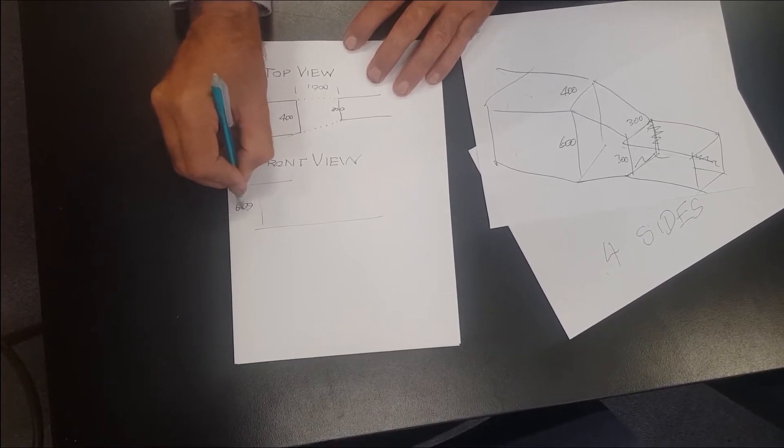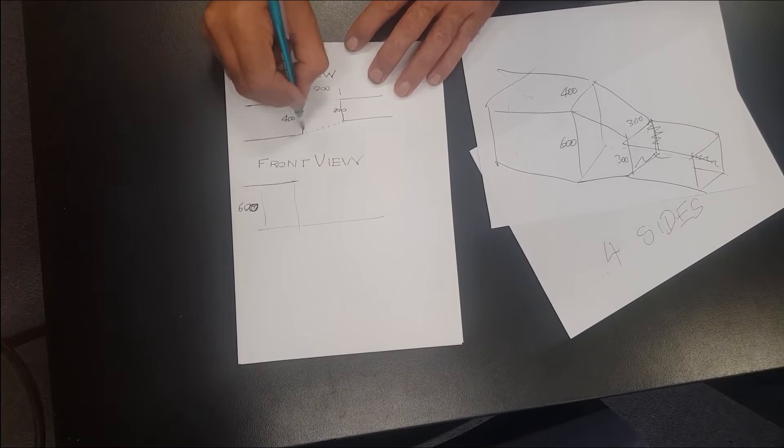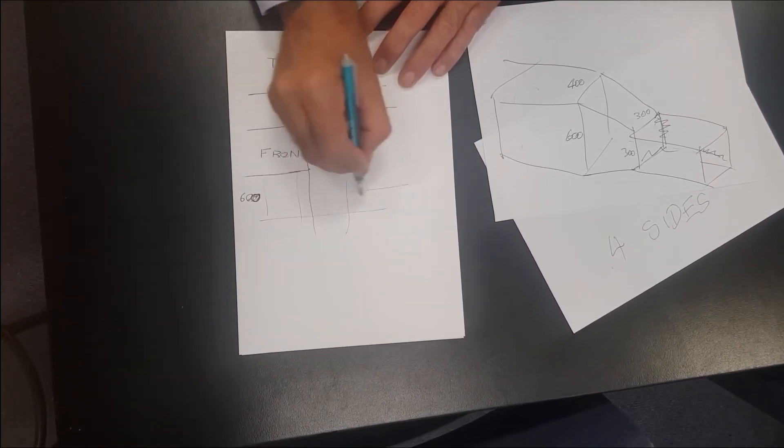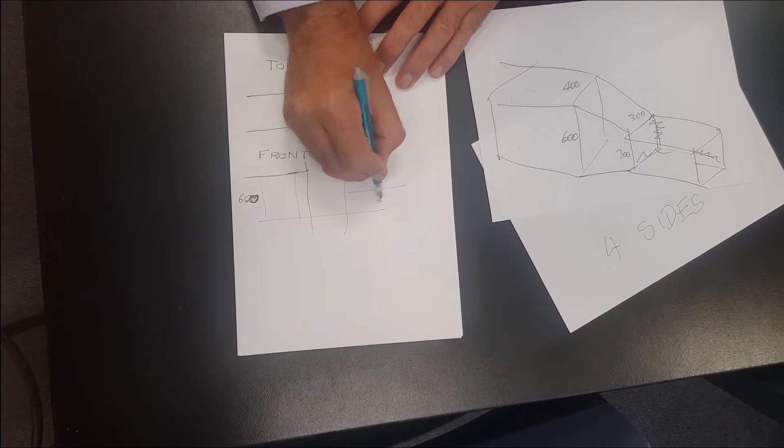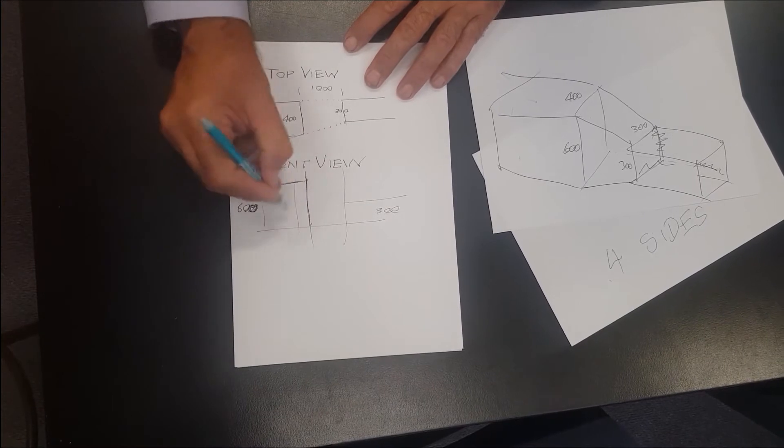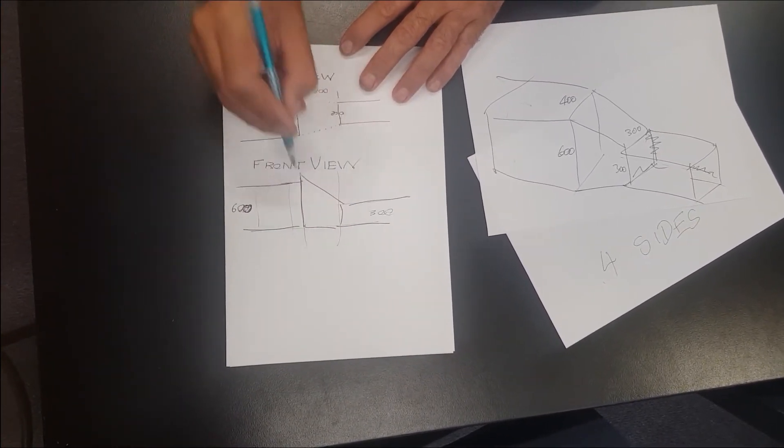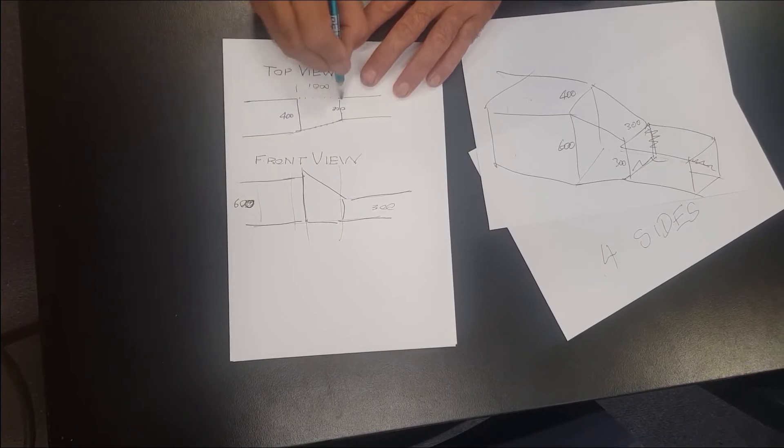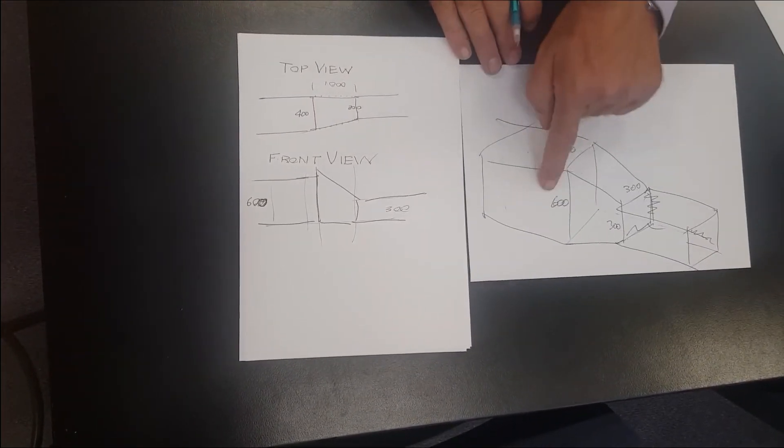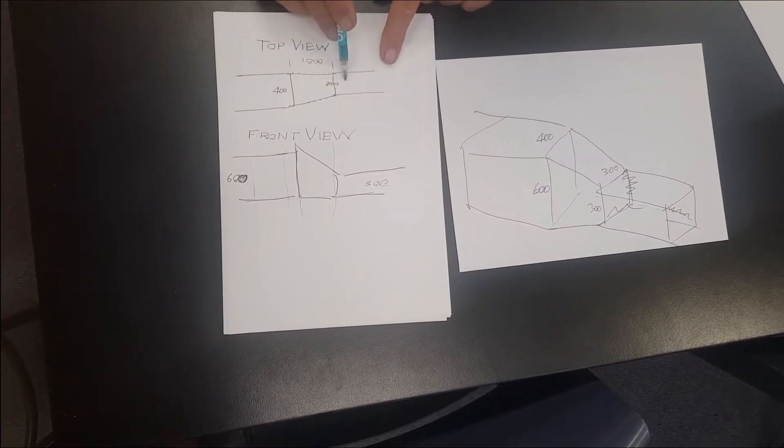I see this. 600. Going down to 300. Does that make sense? Front view. Front view, top view. 600 going to 300. Front view. 400 going to 300. Side view.